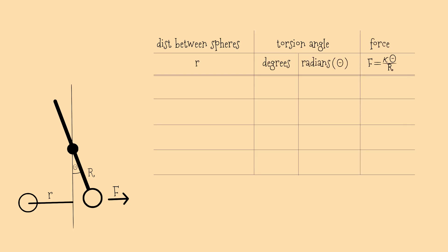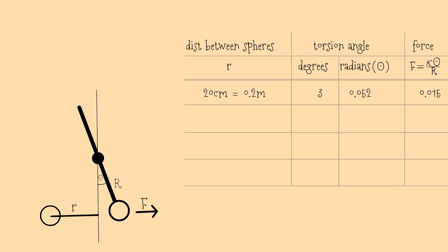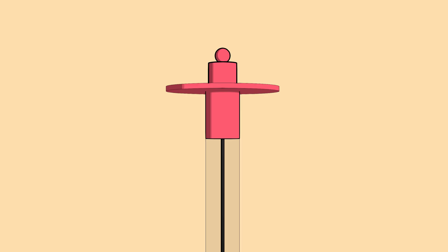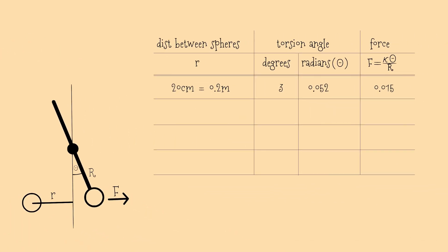Let's record our data. For R equal to 20 centimeters or 0.2 meters, theta equal to 3 degrees or about 0.052 radians, and assuming the torsion constant of wire K equal to 0.283 and capital R equal to 1, the force F is roughly 0.015. To vary the distance R without changing charges, twist the torsion head at the top. It resets the neutral position bringing the spheres closer or farther. Take more readings at different R values.